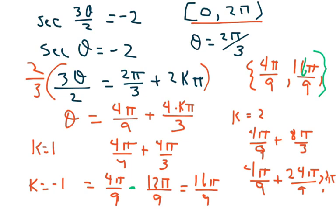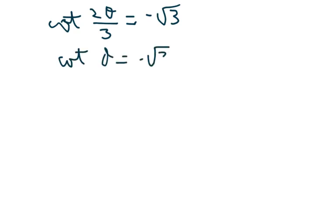Now, the next one is cotangent. So we have cotangent of 2 theta over 3 equals negative root 3. So I think you're getting the hang of this. Cotangent of theta equals negative root 3. So theta would be 5 pi over 6.